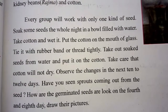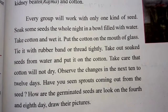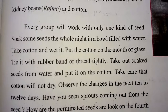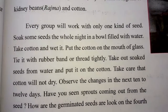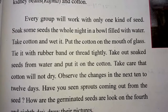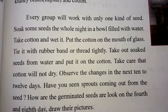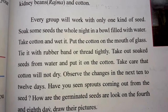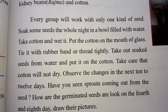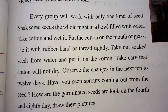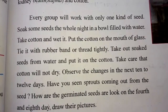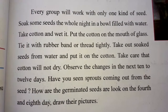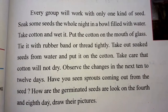Soak some seeds the whole night in a bowl filled with water. Tho joh bhi seeds aapke group ne select ki hain — like kidney beans (rajma) — puri raat usko ek bowl mein bhi gha ke rakhna hai. Take cotton and wet it. Tho aapko thoda sa cotton, yani joh ri hoti hai, woh le na hai, aur usse ghila karna hai. Put the cotton on the mouth of the glass. Glass ke mouth pe, yani ki joh upper wala hissa hai, woha pe aapko cotton rakhna hai. Tie it with rubber band and thread tightly. Phir aapko cotton rakhke usse achse se rubber band se ya phir thread se tightly bandh dhena hai. Take out soaked seeds from water and put them on the cotton.